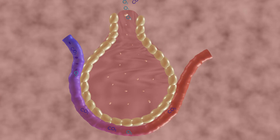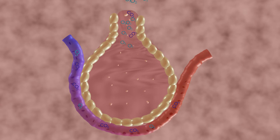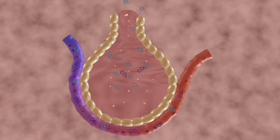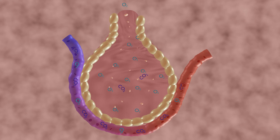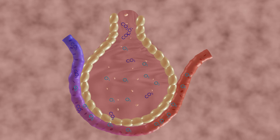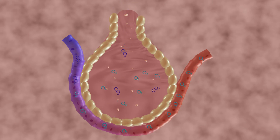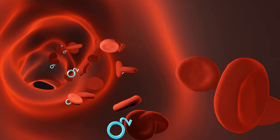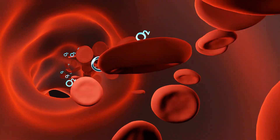Oxygen is taken in and carbon dioxide is released by blood passing through the capillaries of the alveoli. Within the rich network of capillaries surrounding the alveoli, diffusion of oxygen in and carbon dioxide out occurs because of differences in the partial pressures of these gases. Oxygen is then transported to all body cells through blood vessels.